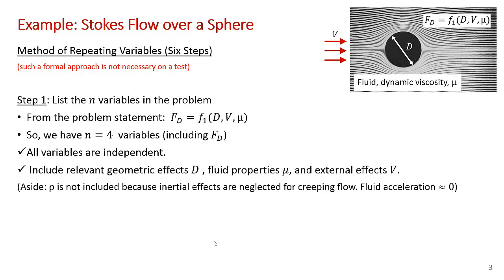Step one is to list the n variables in your problem. From the problem statement, F_D = f₁(D, V, μ). So we have n = 4 variables, including F_D. Don't forget to include the dependent variable, the thing you're after, the drag force. All variables are independent. They include geometric effects, the diameter, fluid properties, the viscosity, and external effects, the free stream velocity.